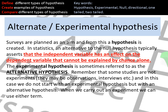We have alternate and experimental hypotheses — these are written when we expect there will be a difference. An experimental hypothesis and an alternate hypothesis are exactly the same thing: it's called an experimental hypothesis when used in relation to an experiment, and an alternate hypothesis when talking about surveys and interviews. This suggests that the IV will have an effect on the DV, and that this will not be down to chance.